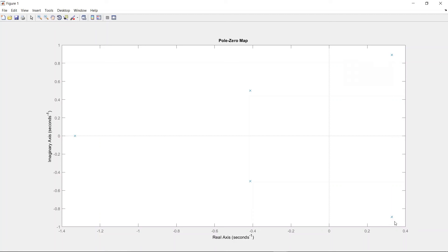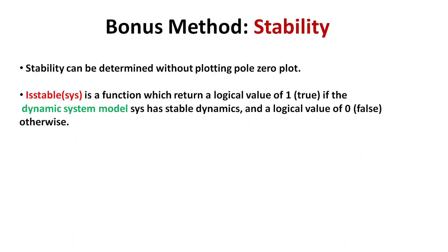Finally, we learned a lot of things, but wait, there is a bonus trick for you. Stability can be determined without plotting the pole-zero plot. is_stable is a function which returns a logical value of one (true) if the dynamic system model has stable dynamics, and a logical value of zero (false) otherwise. Let's verify.